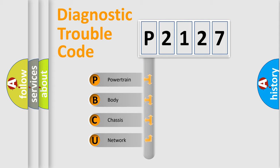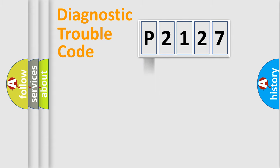We divide the electric system of automobile into four basic units: Powertrain, body, chassis, network. This distribution is defined in the first character code.